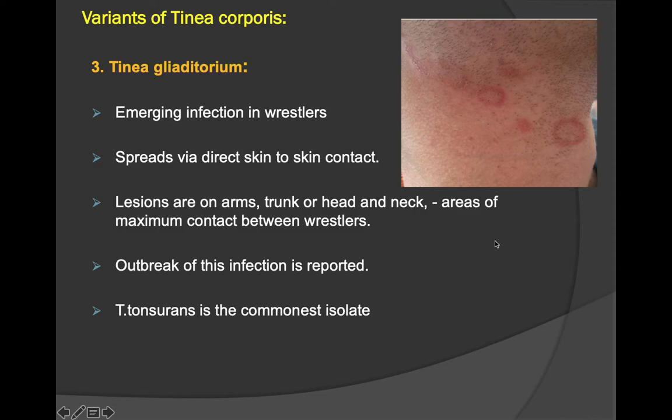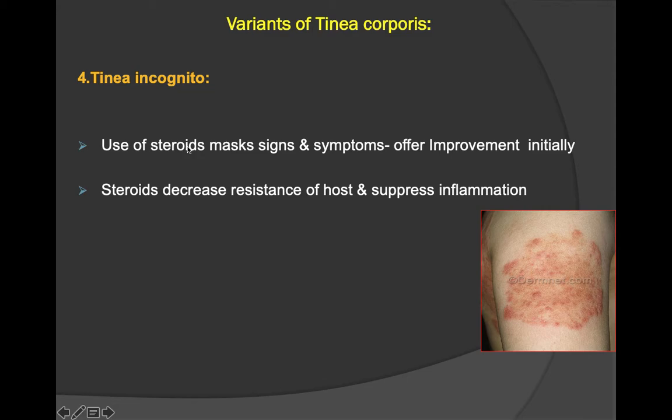Outbreaks of tinea gladiatorum are reported, with T. tonsurans being the commonest isolate. Tinea incognito occurs when the use of steroids masks the signs and symptoms — there is initial improvement, but later there is flaring up of the lesions. Steroids decrease the resistance of the host and suppress inflammation.